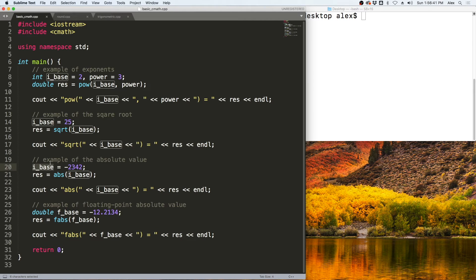Here we are going to take the absolute value of this negative 2,342, and then output it to the screen. Down here, we are going to take this negative 12.2134, and use floating point absolute value on it here, and output it to the screen. You should just expect that to be a positive 12.2134.